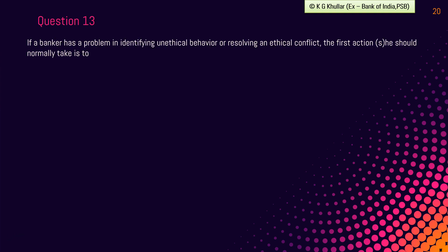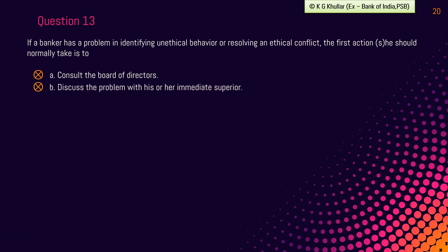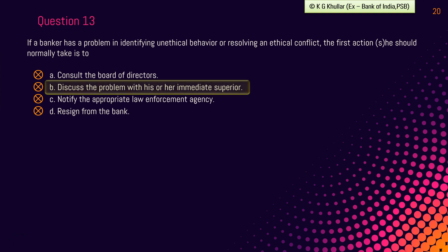Next question: if a banker has a problem in identifying unethical behavior or resolving any ethical conflict, the first action he or she should normally take is to — option A: consult the board of directors; option B: discuss the problem with his or her immediate superior; option C: notify the appropriate law enforcement agency; option D: resign from the bank. The correct option is option B. The banker should first discuss an ethical problem with the immediate superior. If the superior is involved, the problem should be taken initially to the next higher managerial level.